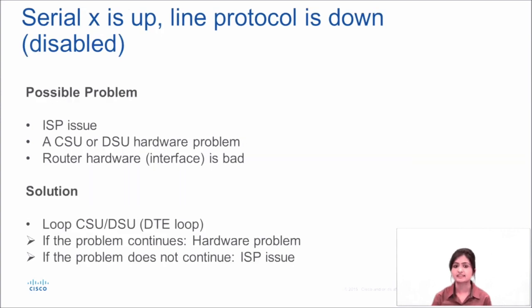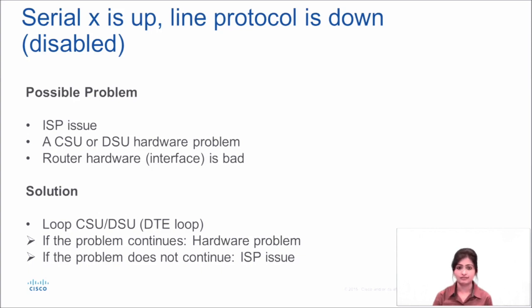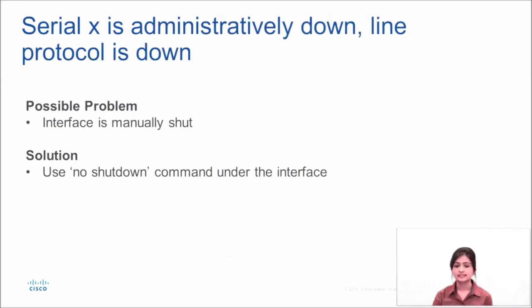Sometimes we see the serial interface is in up state but line protocol is down and shown as disabled. In this case, a possible problem could be a fault from ISP or your CSU/DSU has gone wrong or an issue with your router. We can ask ISP to perform a DTE loop on the CSU/DSU — if the problem continues it would be a hardware problem; if it resolves, it is an ISP issue. Sometimes we see serial interfaces administratively down with line protocol down — in many cases a 'shutdown' command is configured under the interface by mistake, so you can simply configure 'no shutdown' under the interface and it will be resolved.